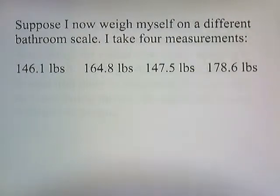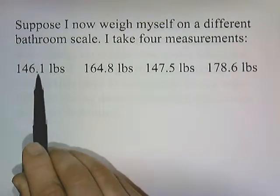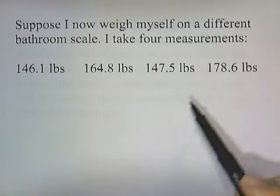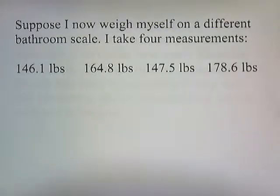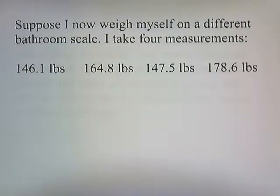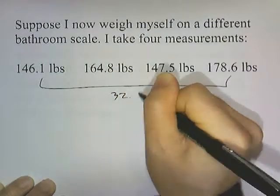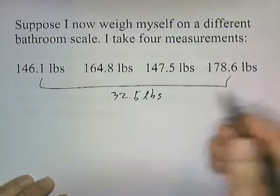Suppose I weigh myself on a different bathroom scale, an older bathroom scale that's been used quite a bit. The first time I step on this different scale I weigh 146.1 pounds. Then I jump off and jump on it again and I weigh 164.8 pounds. The third time the scale tells me I weigh 147.5 pounds. And the fourth time I weigh 178.6 pounds. You can see that there seems to be a great deal of variation in the measured weight each time I jump on the scale. In fact, the difference between these two is about 32.5 pounds. So these data are imprecise.